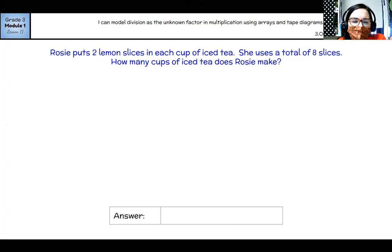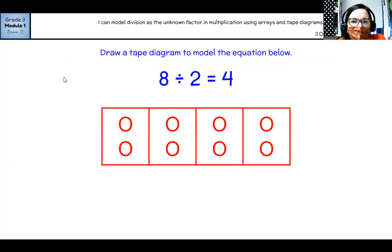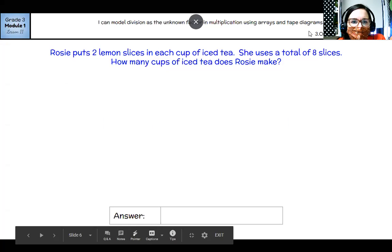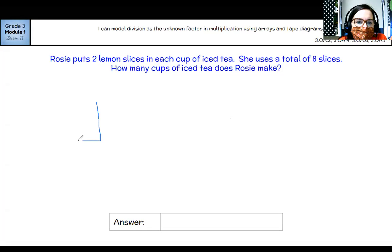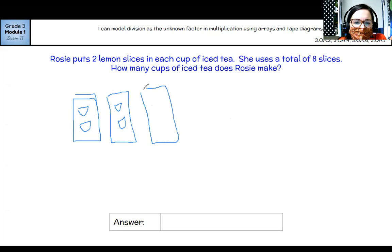So start with the drawing. I'm going to start with the drawing. So I know that she puts two lemon slices into each iced tea. And she uses a total of eight. So I'm going to put two in each glass until I get to eight lemons. So two, four, six, eight.